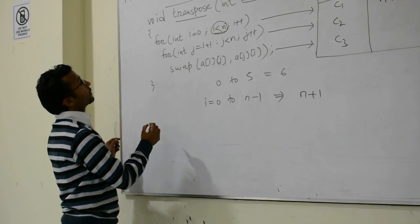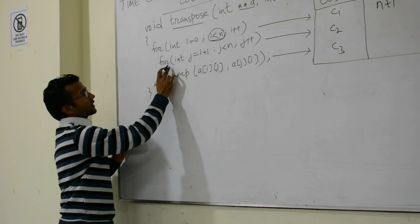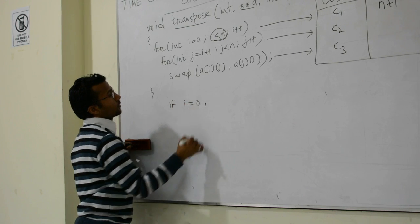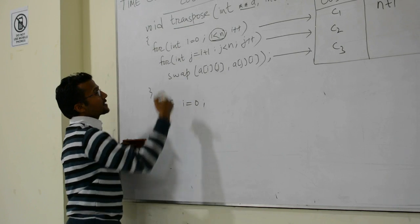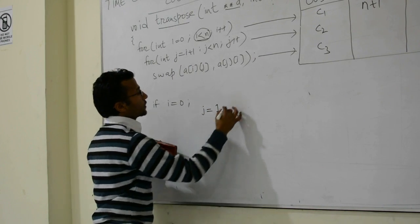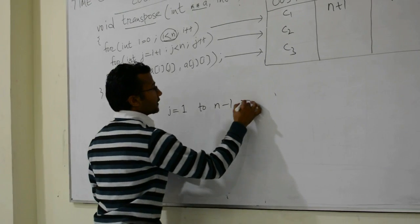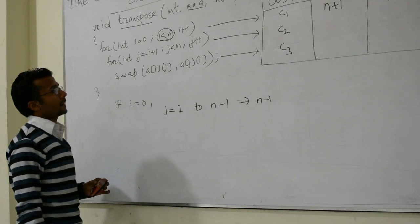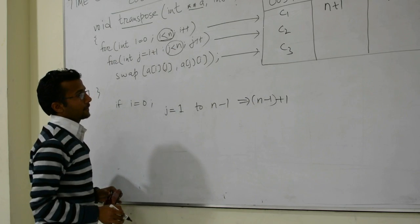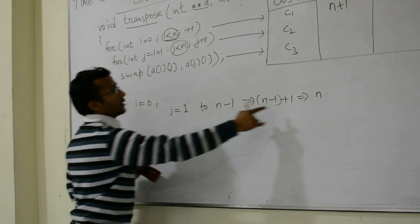Now let us talk about the second for loop, which is the inner for loop. For this we also need to consider the outer for loop. Whenever i equals 0, j will start from 0 plus 1, which is 1, till j less than n, so till n minus 1. From 1 to n minus 1 there are n minus 1 numbers, plus 1 more time for the last condition check, making it n times. So whenever i equals 0, the second for loop runs for n times.